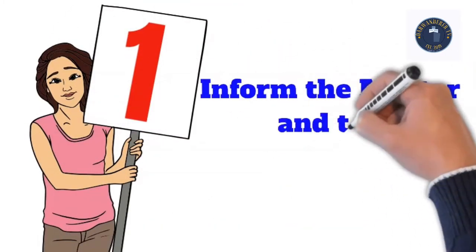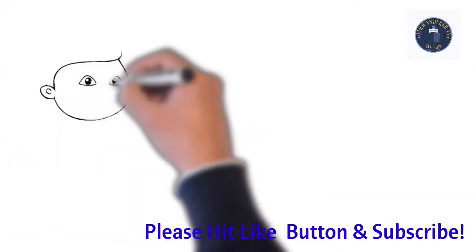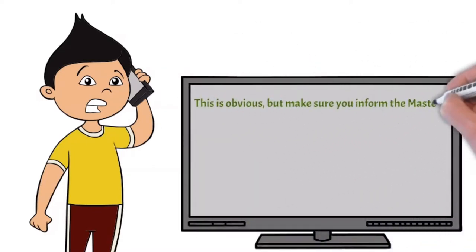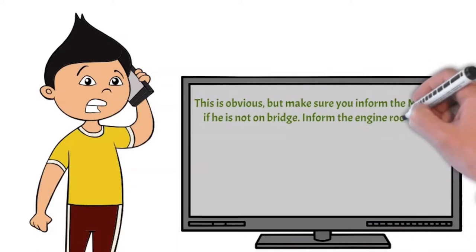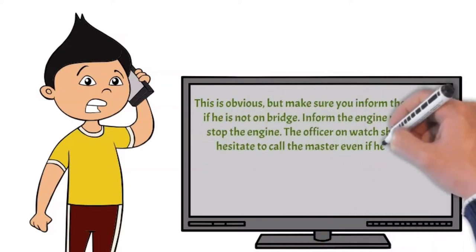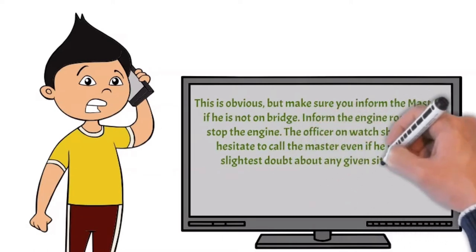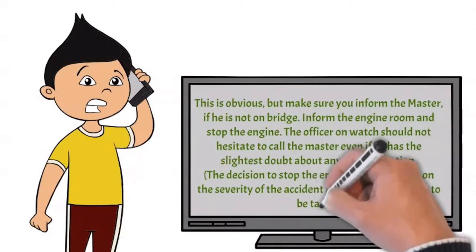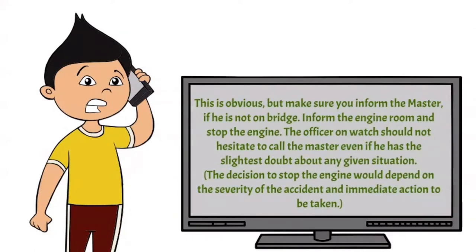1. Inform the master and engine room. This is obvious, but make sure you inform the master if he is not on bridge. Inform the engine room and stop the engine. The officer on watch should not hesitate to call the master, even if he has the slightest doubt about any given situation. The decision to stop the engine would depend on the severity of the accident and immediate action to be taken.